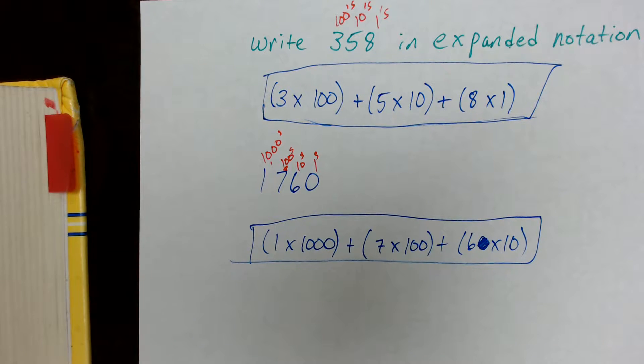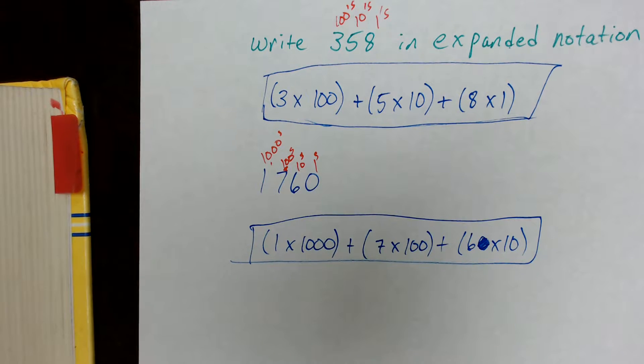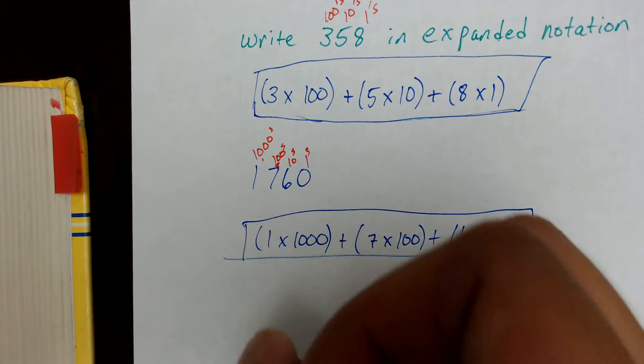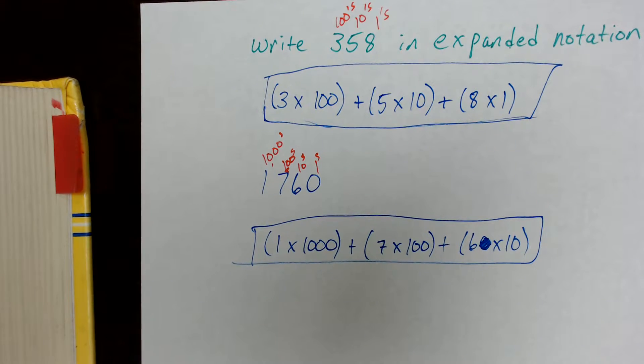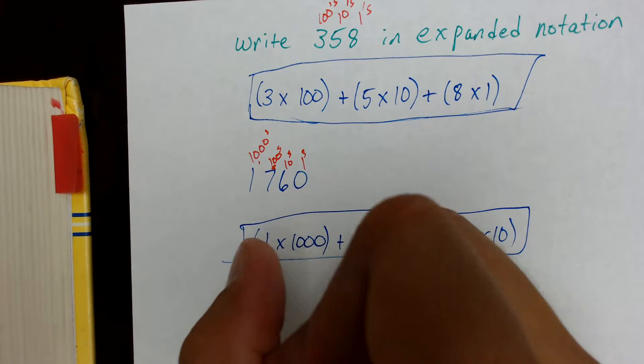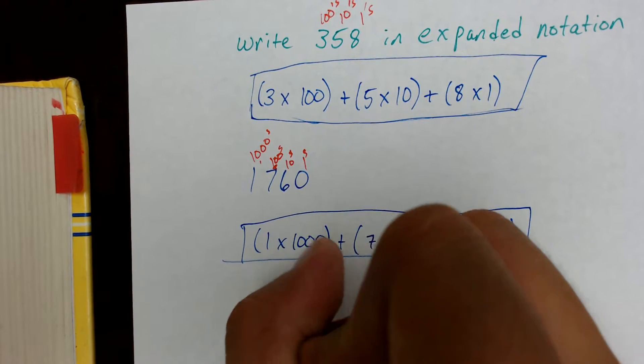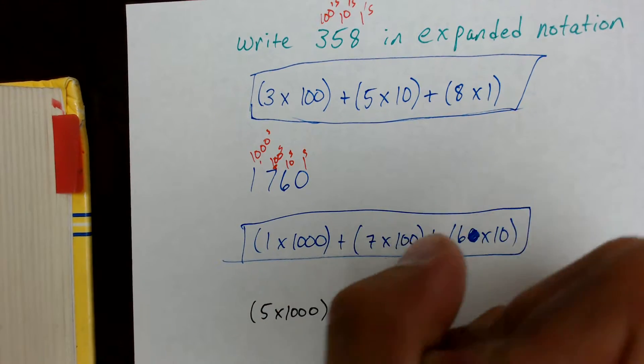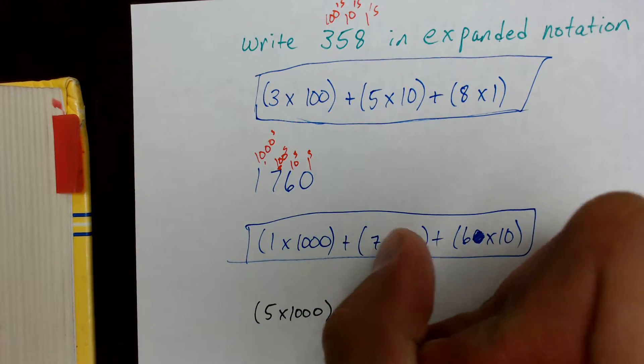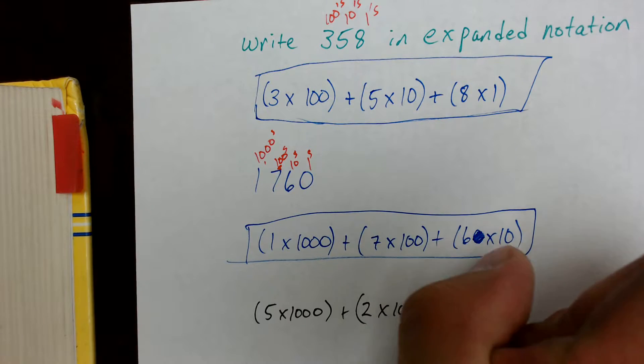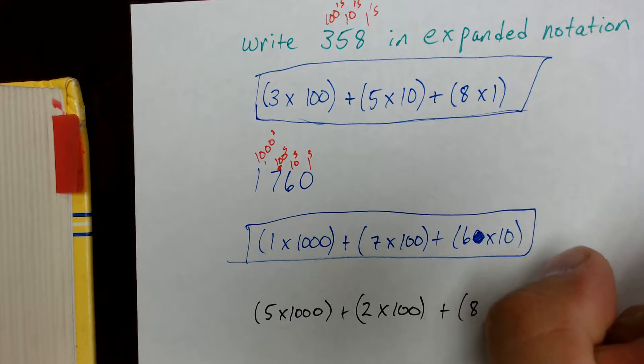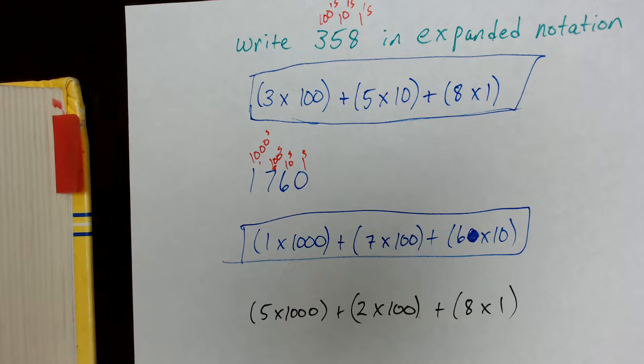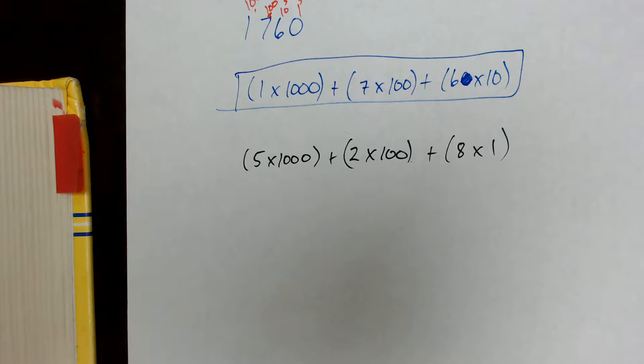Now let's do the opposite. Let's take something in expanded notation and write it in standard notation. Let's say we've got the number 5 times 1,000 plus 2 times 100 plus 8 times 1.